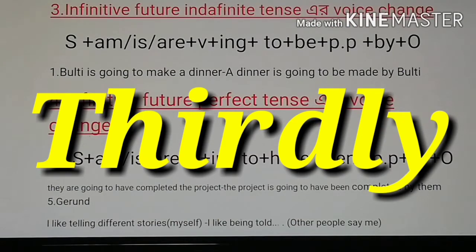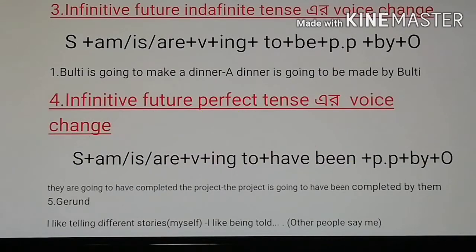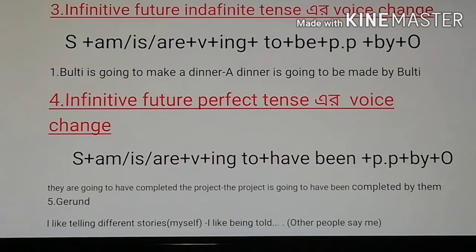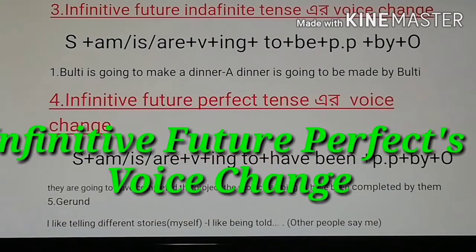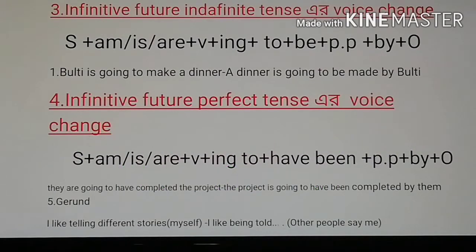Number three is future indefinite tense voice change. Look at its example: 'Bulty is going to make a dinner.' The passive voice form is: 'A dinner is going to be made by Bulty.'